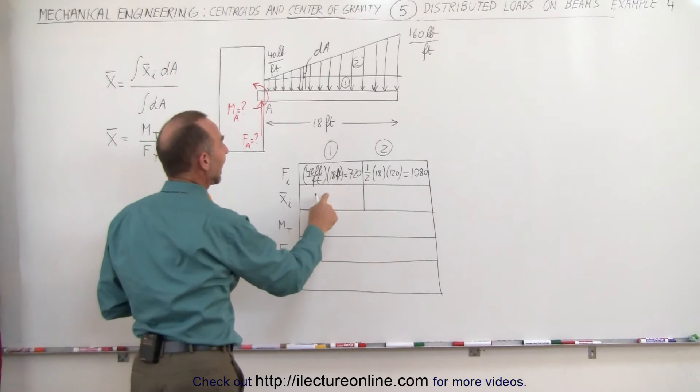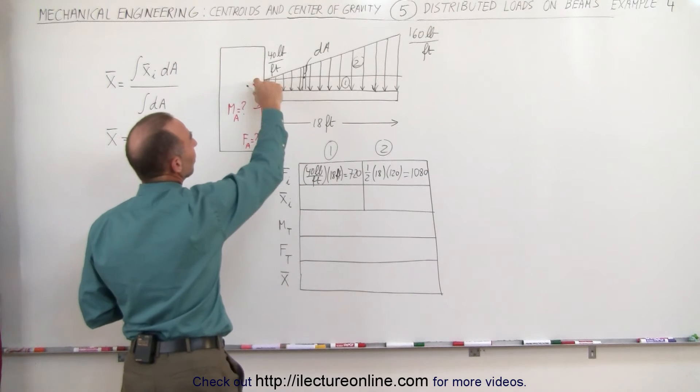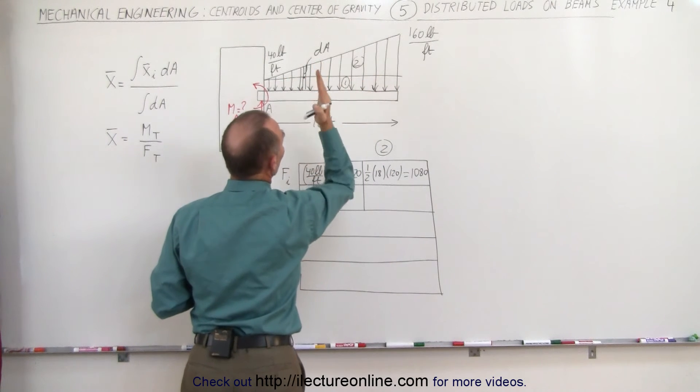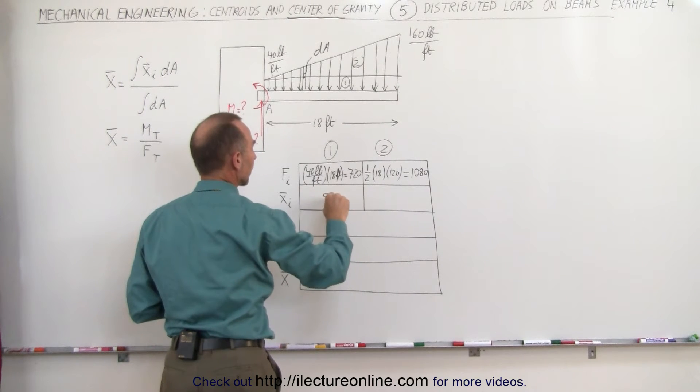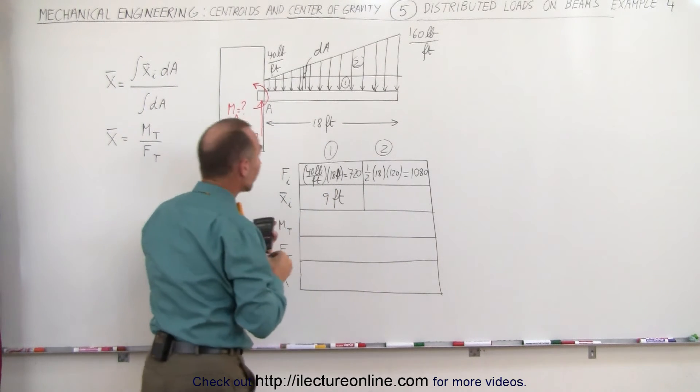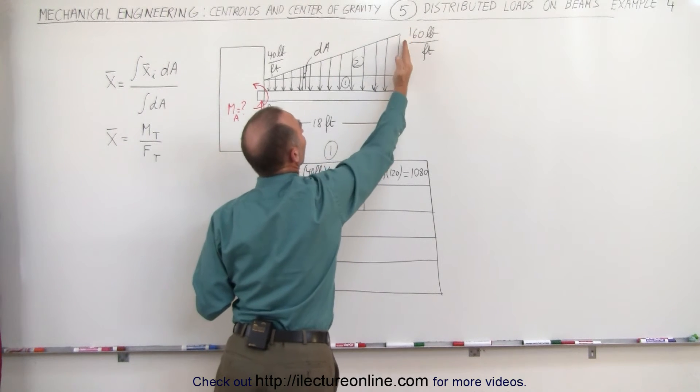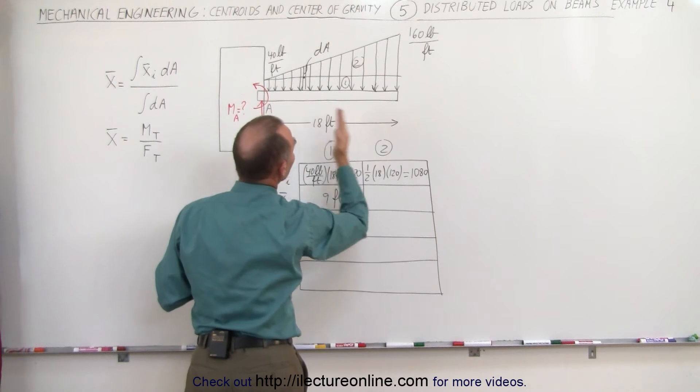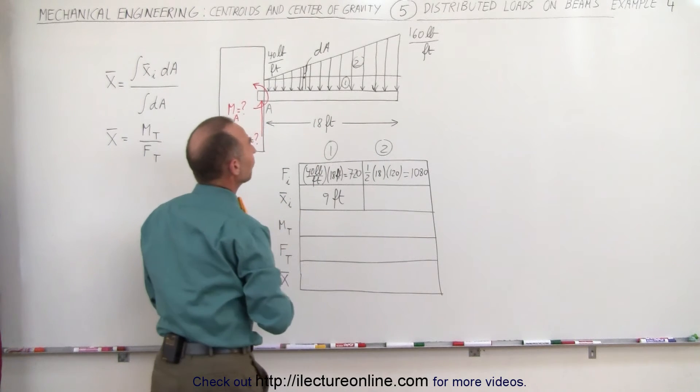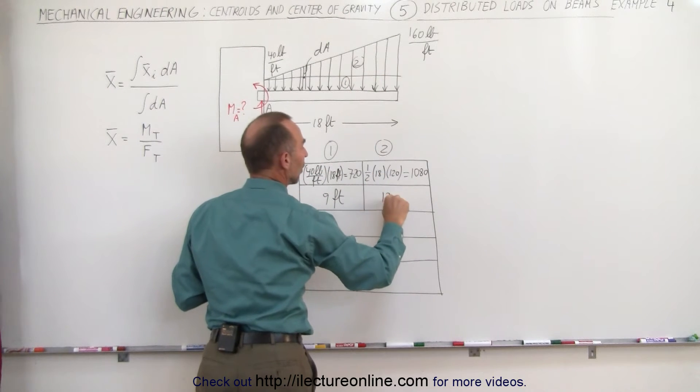Next we find the x-coordinates of the centroids of the two sections. Since this is a rectangular section it should be right halfway in between, nine feet away from point A. For the triangular section we know it's one third from the base from the high point, one third from the left or two thirds from the right. Since this is 18 feet, two thirds of 18 feet is 12 feet. So the centroid for the triangular portion is at 12 feet.